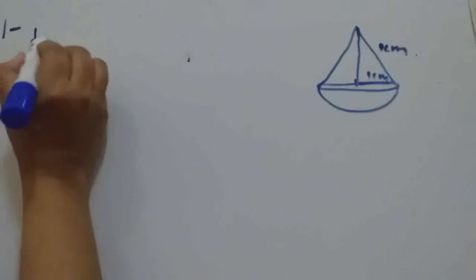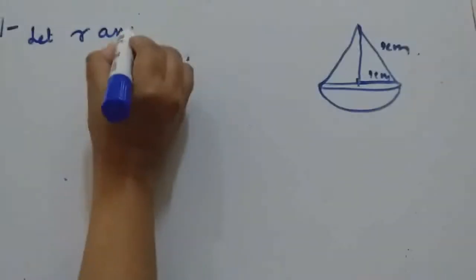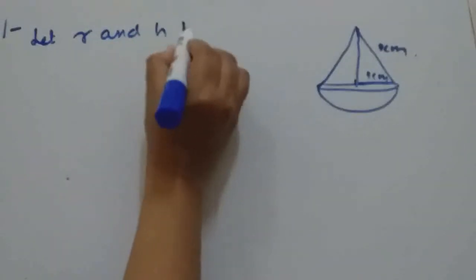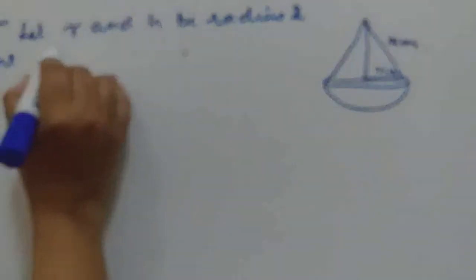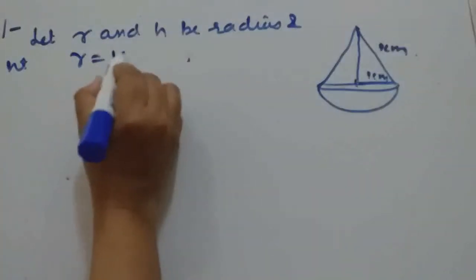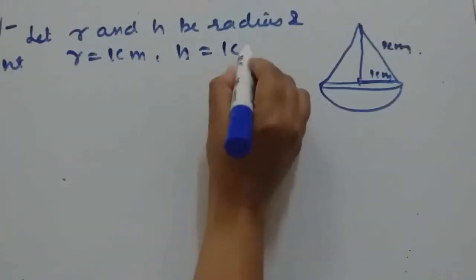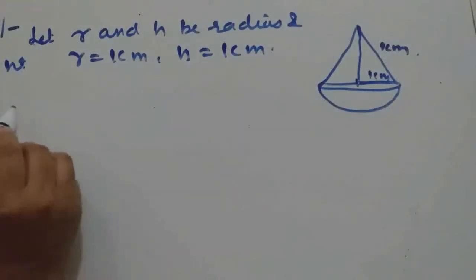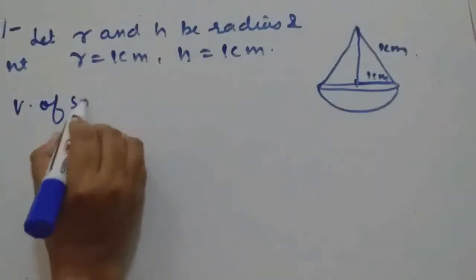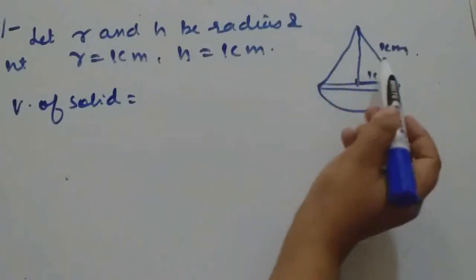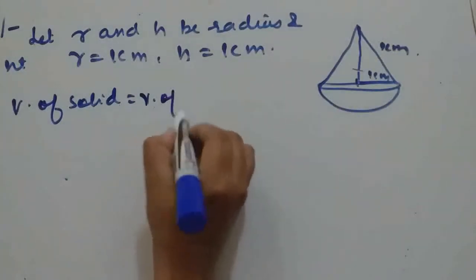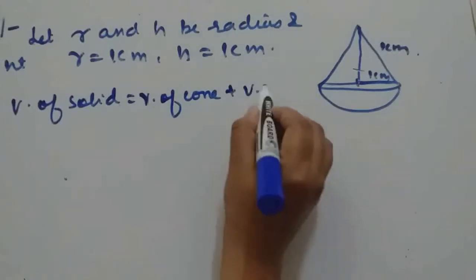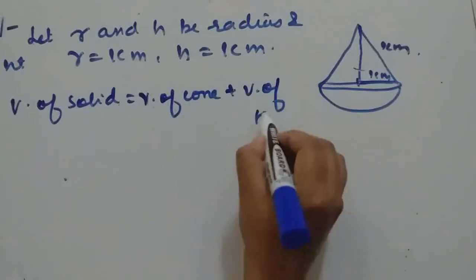Let R and H be the radius and height. R is one centimeter and height is also one centimeter. The volume of the solid equals the volume of the cone plus the volume of the hemisphere.